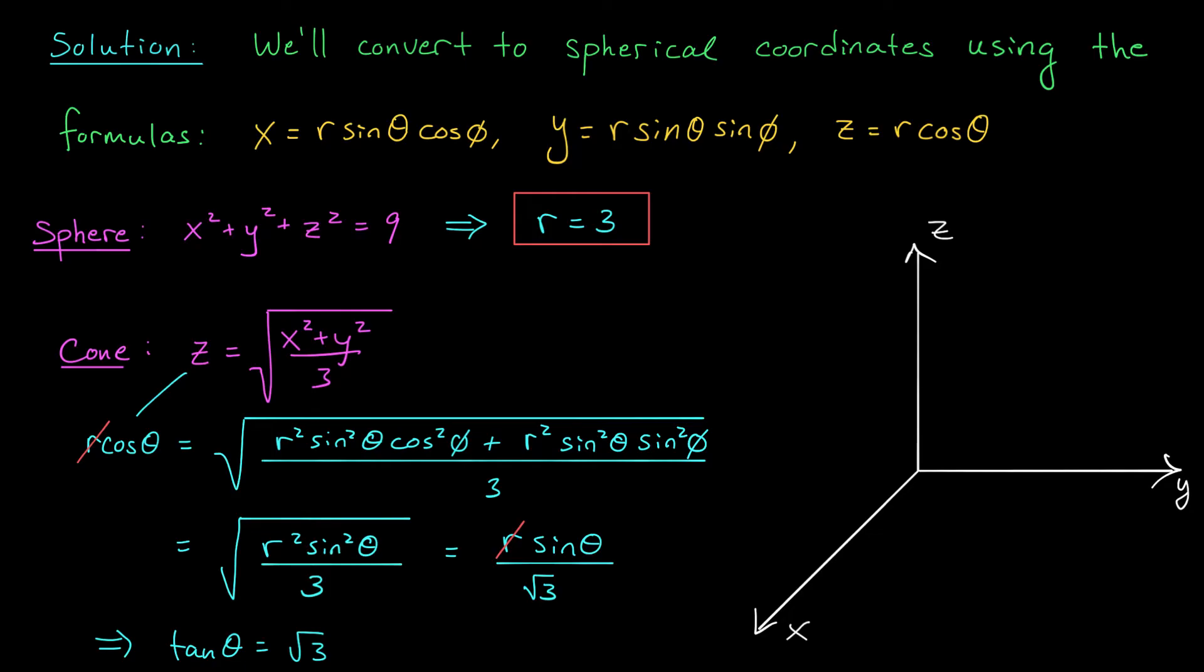Ah, but hold on a second. In our last video, we said that θ was between 0 and π. So if θ is between 0 and π, and tan θ is √3, well, go back to your unit circle. There's only one possibility for θ. Theta is π/3. So there you go, folks. This complicated equation of the cone in Cartesian coordinates simplified to θ = π/3 in spherical coordinates.